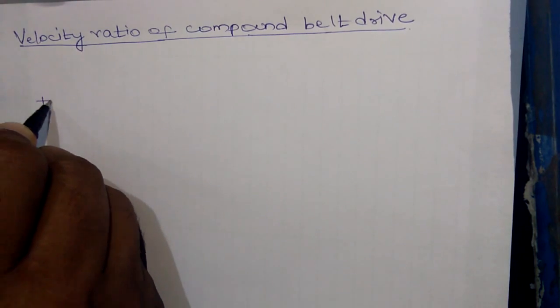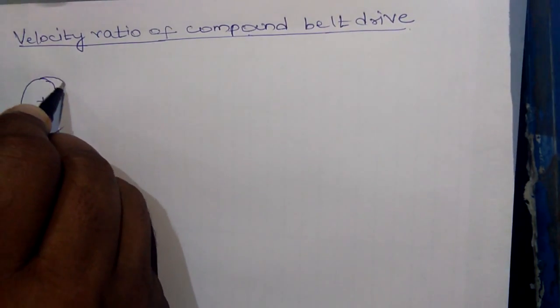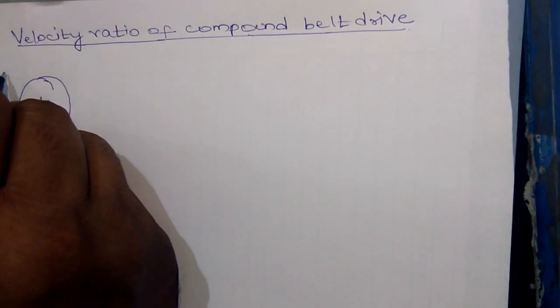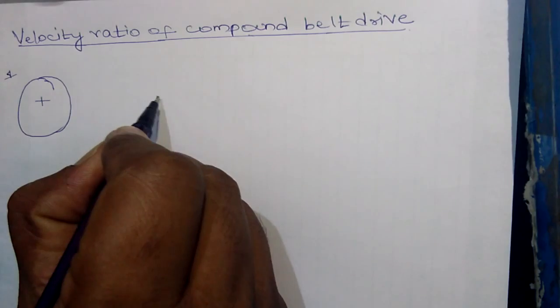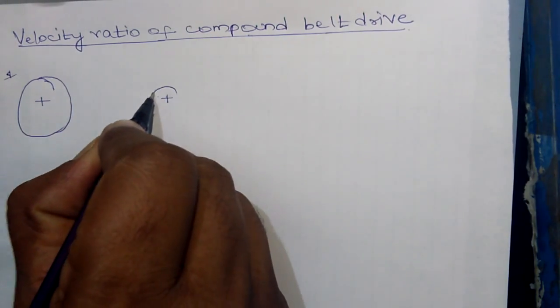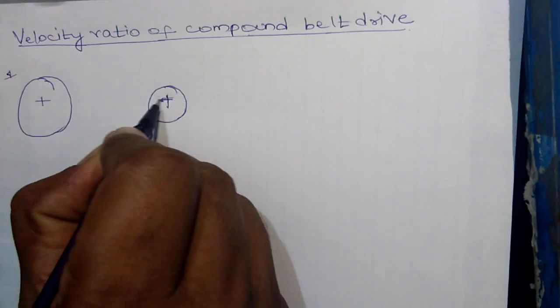This is the construction of a compound belt drive. This one is pulley 1, this is pulley 2 driven by pulley 1.